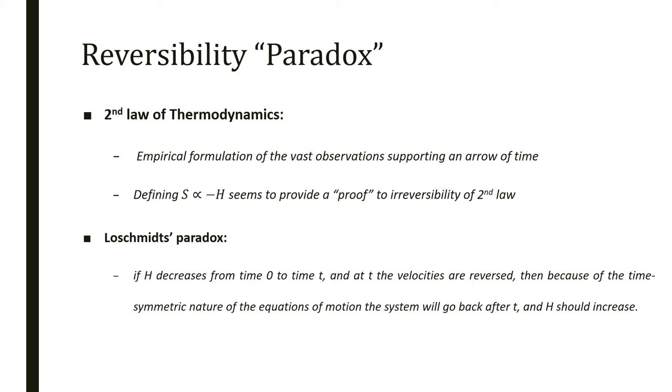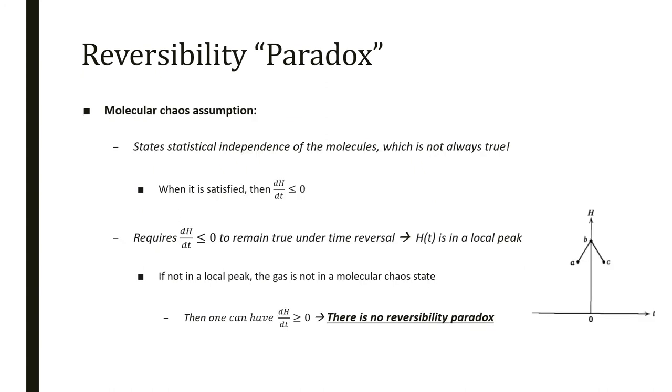A lot of questions were raised. One is called Lohschmidt's paradox, actually a paradox about reversibility. It says that if H decreases from time 0 to t, and at time t these velocities are reversed, then because of the symmetries of the equations, it would be like going back after t, and then H should increase. This would be in contrast with what the H theorem was telling.